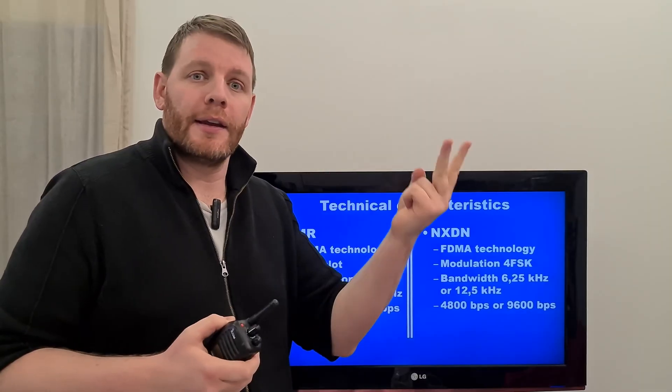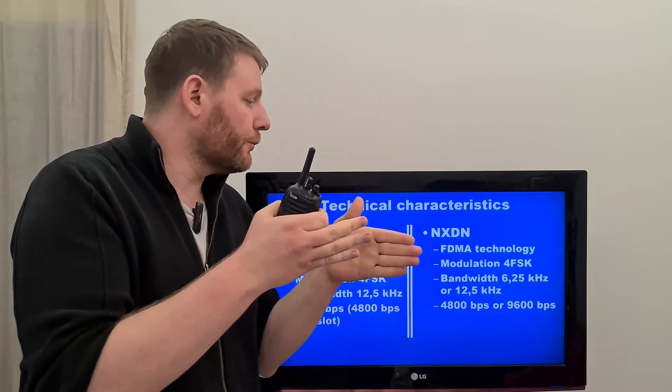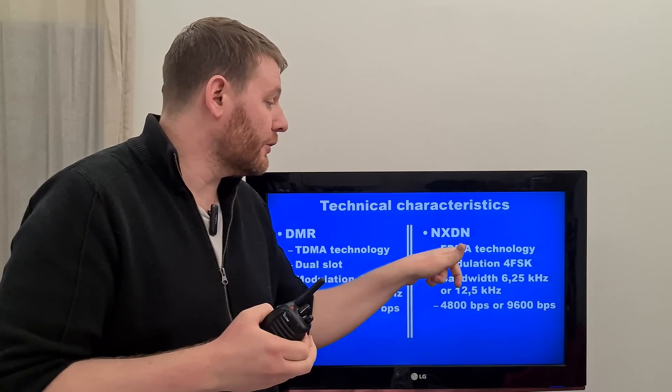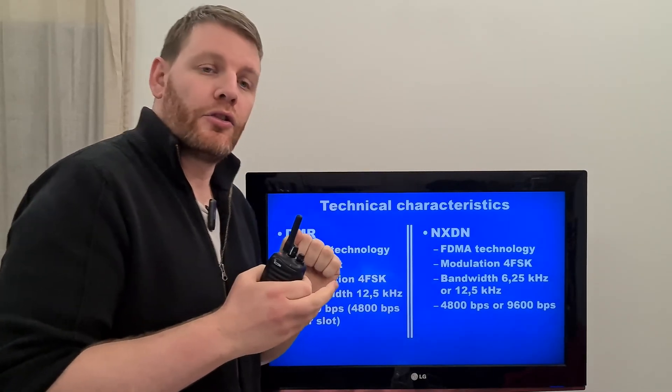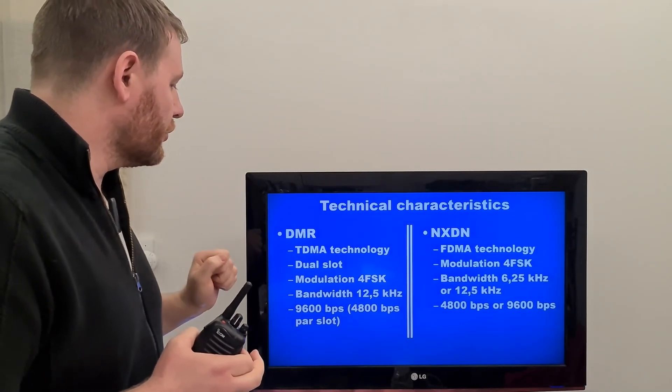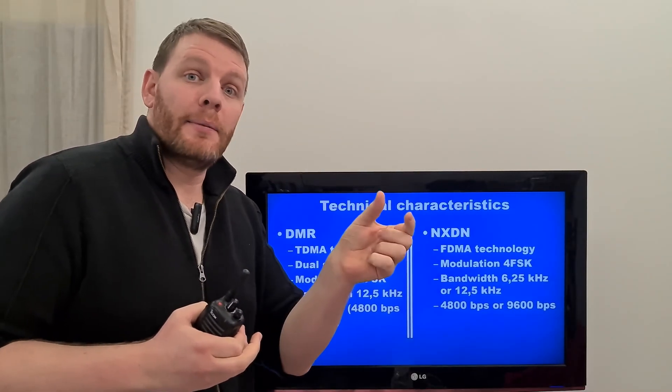If you want to have a second conversation at the same time, you have to change the frequency. This is the frequency division multiple access. You just change frequency. Here, you just change of time slot.